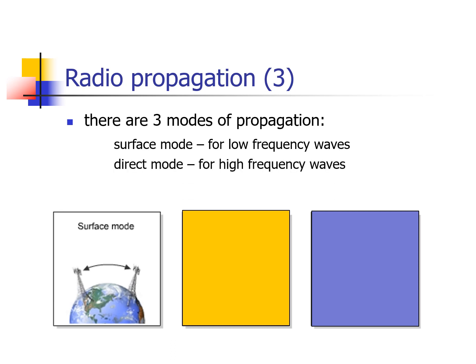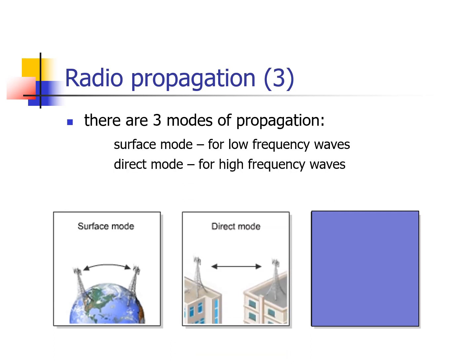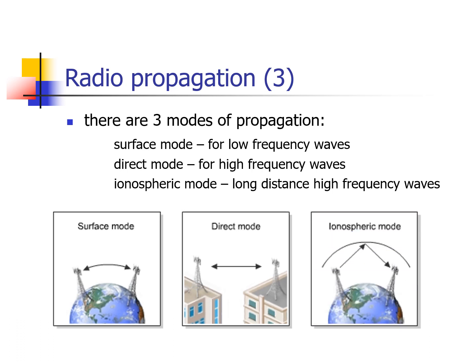Second is direct mode for high-frequency waves — for instance, radio waves propagate from one building to another. And the last is ionospheric mode for long-distance high-frequency waves, wherein radio waves reach the ionosphere before being reflected back to the Earth's surface.